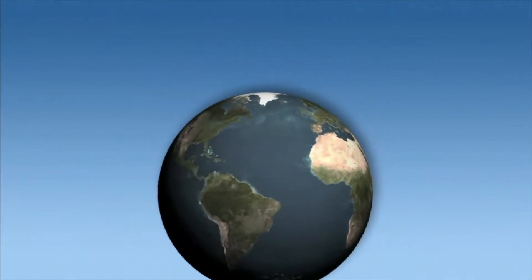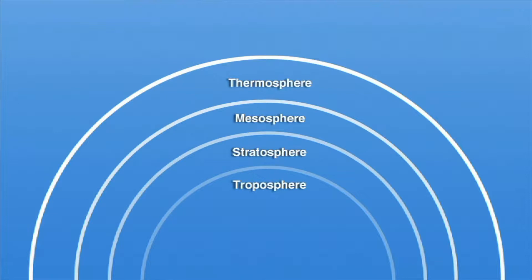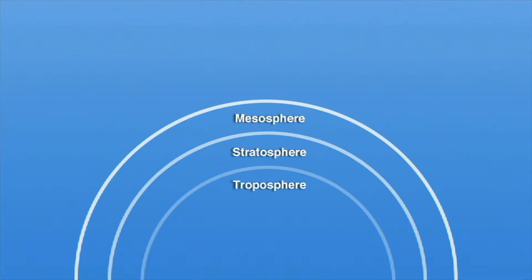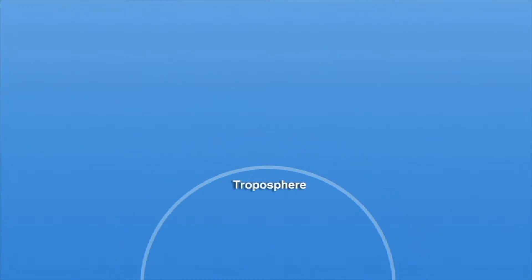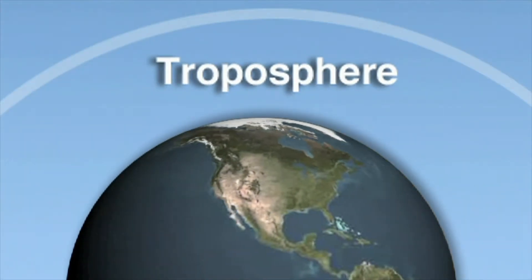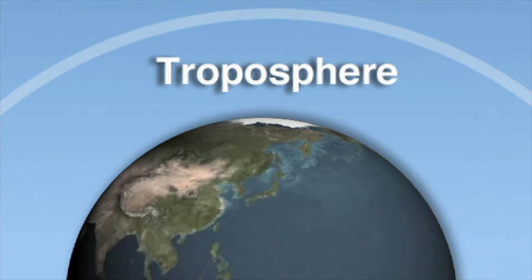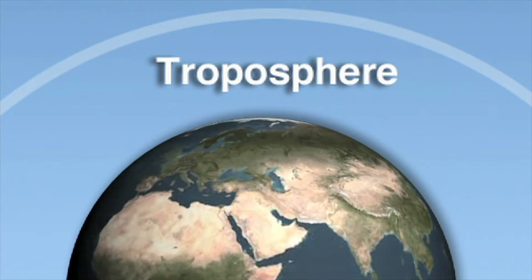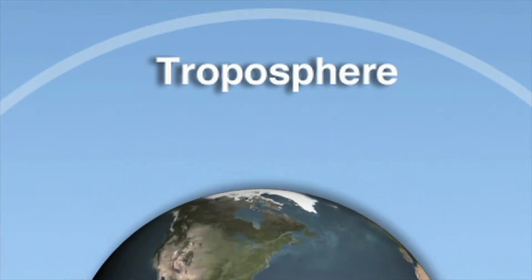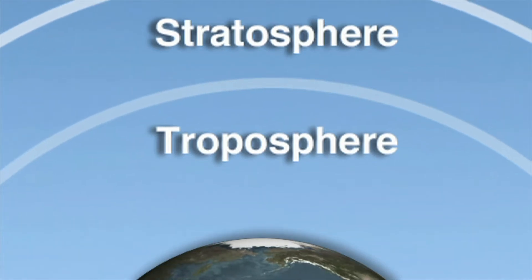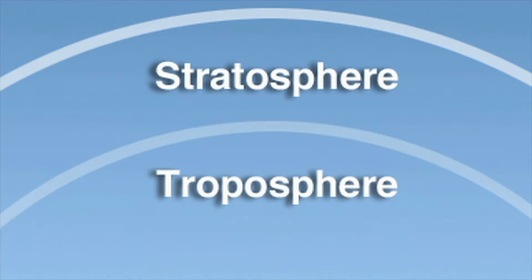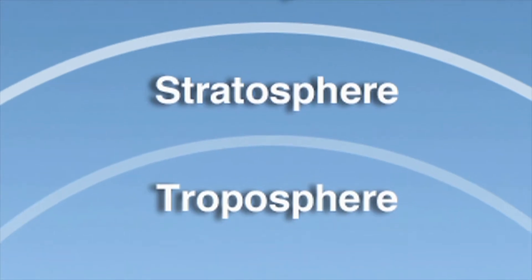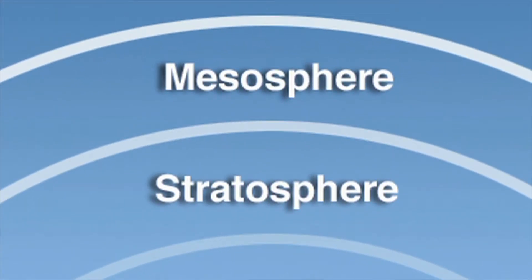The atmosphere has four layers: the thermosphere, mesosphere, stratosphere, and the troposphere. The troposphere is the layer closest to the surface of the planet — we live in the troposphere. Above the troposphere is the stratosphere; airplanes fly in the stratosphere. After the stratosphere is the mesosphere. The mesosphere is so cold that clouds freeze within its boundaries.